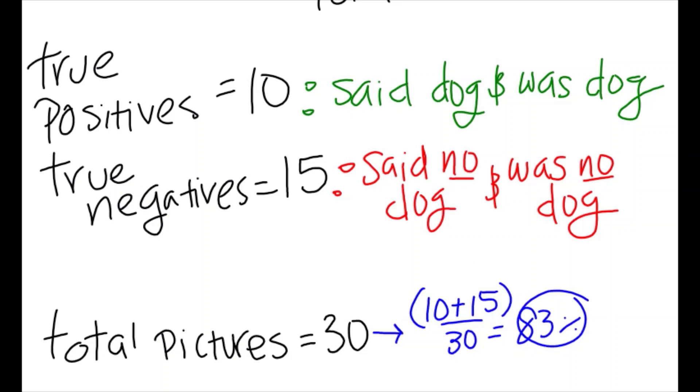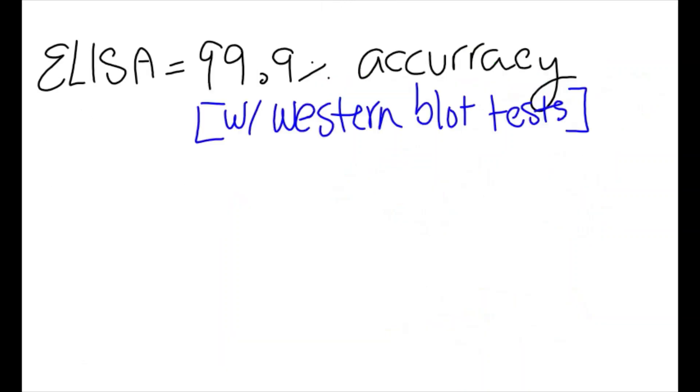So, in the example of the child, if the child had correctly said there was a dog in the pictures 10 times, and had correctly said there wasn't a dog 15 times out of the total 30 pictures they classified, then this child would have an accuracy rate of identifying these images of 83%.